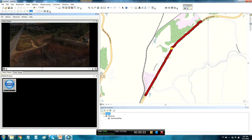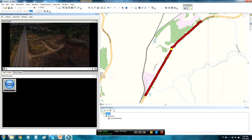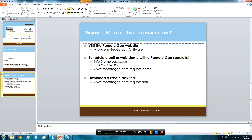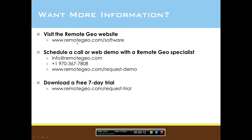And that's how you add geospatial drone video to Esri's ArcMap GIS software. So if you want to learn more, I would encourage you to visit our website at remotegeo.com/software, or give us a call or email to schedule a chat or web-based demo with one of our Remote Geo specialists. You can send us an email at info@remotegeo.com, call us at 970-367-7808, or fill out the request demo form at remotegeo.com/request-demo. We also offer a free 7-day trial of the Line Vision Esri ArcMap add-in software at remotegeo.com/request-trial.